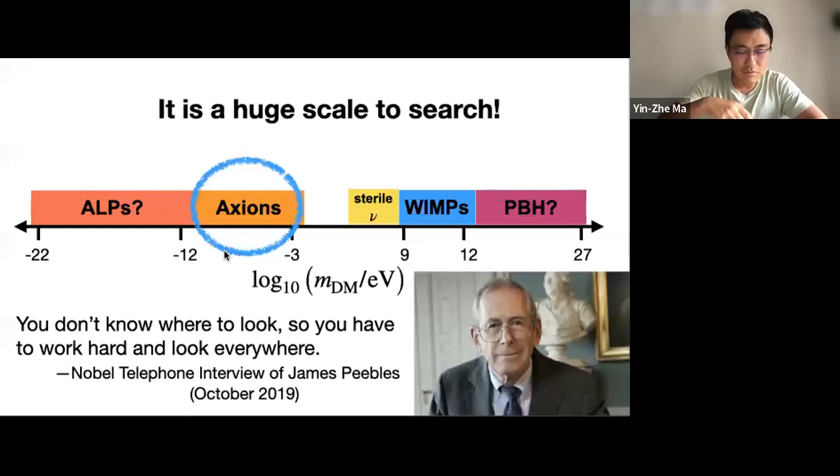We have absolutely no idea where the dark matter is on this parameter space. There's no experimental evidence whatsoever on where the point of dark matter mass is. The take-home message from James Peebles is that for dark matter you don't know where to look, so you have to work hard and look everywhere. Today I'm looking for axions, a well-motivated candidate of dark matter with mass below electron-volt. If you convert this mass into energy, this will be in the radio band exactly covered by radio telescopes such as MeerKAT, SKA, or ASKAP.